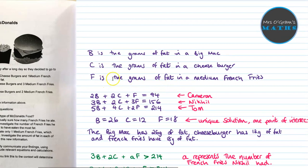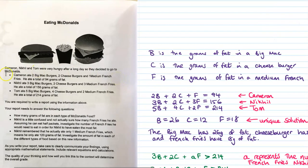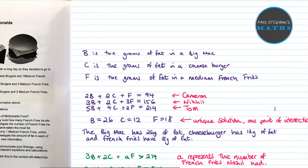So we've got our definition and then we go back across to the information we're given. Two lots of Big Macs, two lots of cheeseburgers, one medium fries makes 94 grams of fat. So there's Cameron's equation there. And then we've got one that relates to Nicol and Tom. We put that into the graphics calculator and we can get an exact solution there.